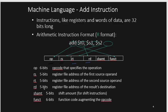The reason the register fields are 5 bits is because 2 to the power of 5 is 32, and we have 32 registers (0 to 31). So 5 bits of addressing can identify any of the 32 registers. There are also 5 bits for shift amount, which are used for shift instructions, and 6 bits for the function code.